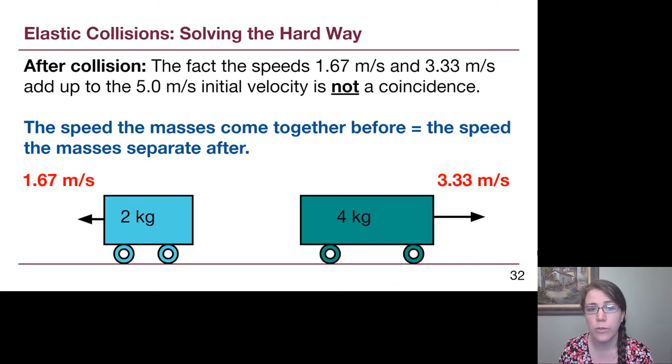Instead, what we find as our final answer here is that one of the blocks is going 3.33 meters per second, so three and a third meters per second to the right. The other block is going 1.67 meters per second, or one and two thirds meters per second to the left. And what we find when we look at those numbers is that those two, when you think about the fact that they're in opposite directions, they actually add up in total to the 5 meters per second that the incoming velocity had. So what we've actually figured out is that the speed that these two masses come together in one dimension is equal to the speed of the masses when they leave. There's a kind of flip in direction, but the idea stays the same.